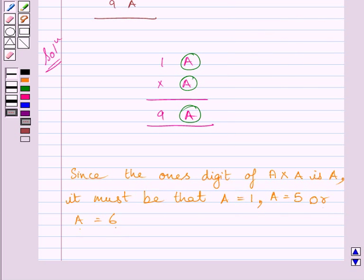Clearly, the product of 1A and A is greater than 90. We know that A cannot be equal to 0, so product of 1A and A is greater than 90.